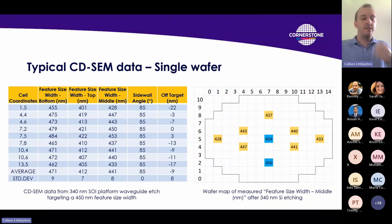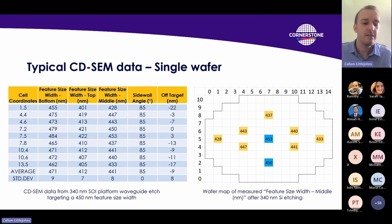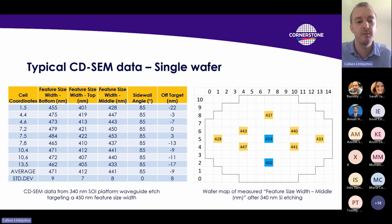This shows some typical data that we might see in the Cornerstone process. This particular process is from the 340 nanometer SOI platform, and the target feature width for a waveguide is 450 nanometers.